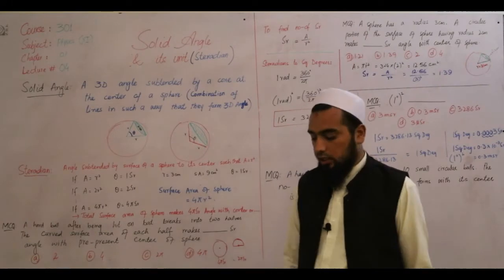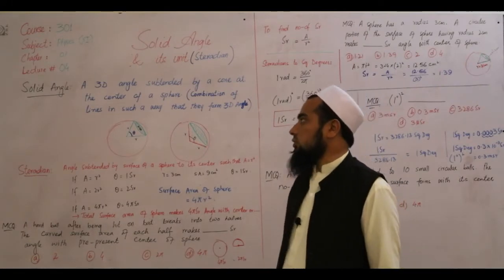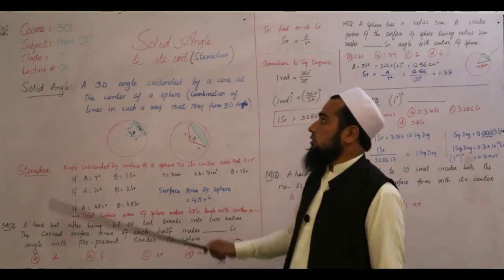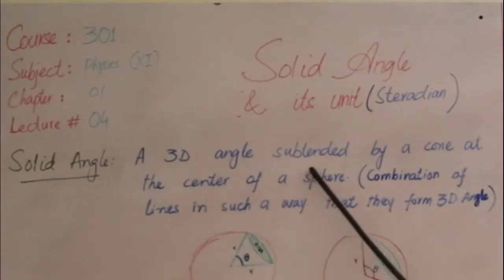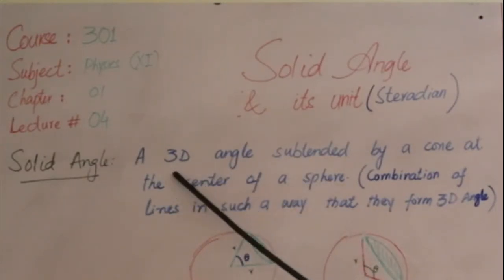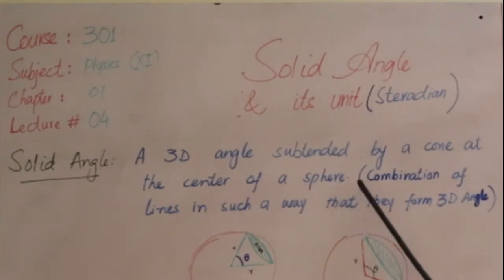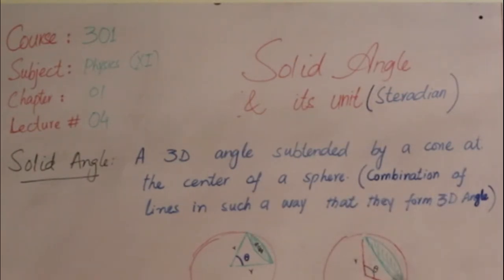Solid angle ہم پہلے discuss کرتے ہیں. ہم دیکھتے ہیں کہ solid angle کیا ہے. So solid angle is a 3D angle — a 3-dimensional angle subtended by a cone at the center of a sphere. There is a combination of lines forming this 3D angle.